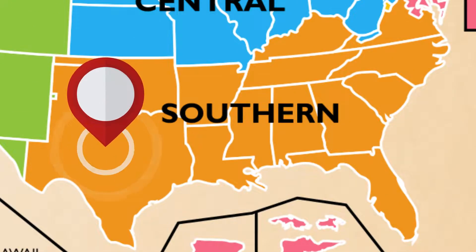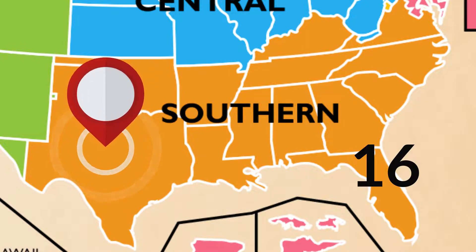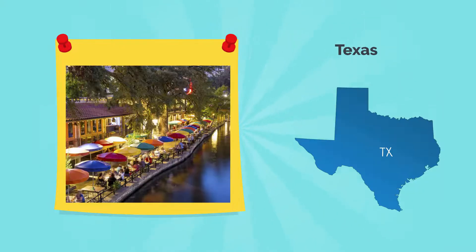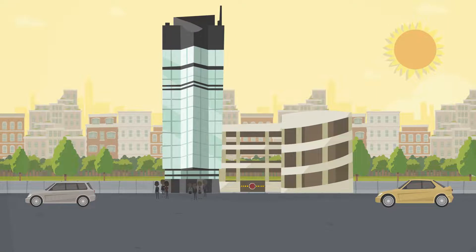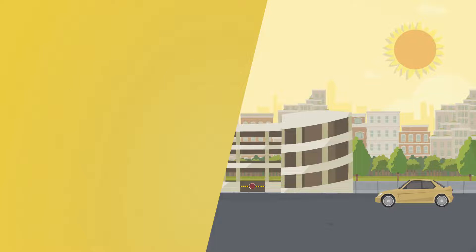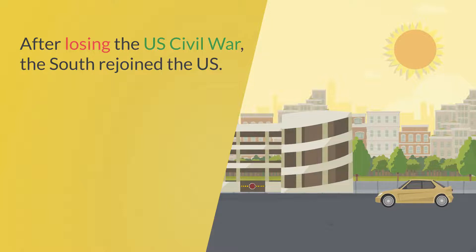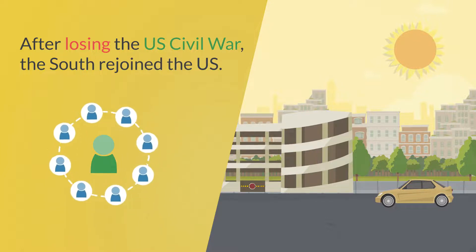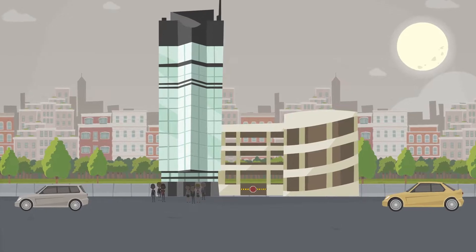The South claims the most states, as 16 states belong to the South. Some notable Southern states include Virginia, Georgia, Florida, and Texas. These states tend to have much warmer and sunnier weather. The South has quite an infamous reputation in U.S. history as it tried to secede, aka leave the USA, in order to form their own country during the 1860s, since the South's economy largely depended on the free labor of slaves. After losing the U.S. Civil War, the South rejoined the U.S. Today, the Southern states have some of the fastest growing population in the U.S. This region typically has warm winters and hot summers.